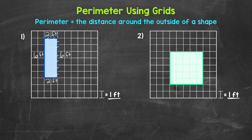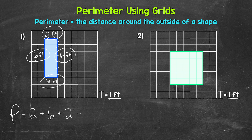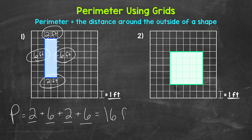Now all we need to do is add those four side lengths to get the perimeter. So perimeter equals two feet plus six feet plus two feet plus six feet. It does not matter what order we add these side lengths in — as long as we include all of the sides, we will get the correct perimeter. Two plus six is eight, plus two is ten, plus six is 16 feet. So the perimeter equals 16 feet — that's the distance around the outside of that rectangle.